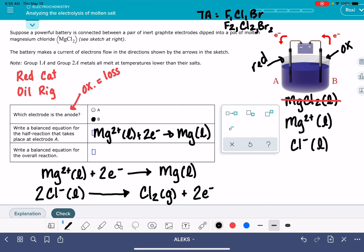And then a balanced equation for the overall reaction, that's going to be combining these two half reactions. Mg2+ liquid plus 2 Cl- liquid. Those electrons are going to cancel out. We're going to make Mg liquid and Cl2 gas.